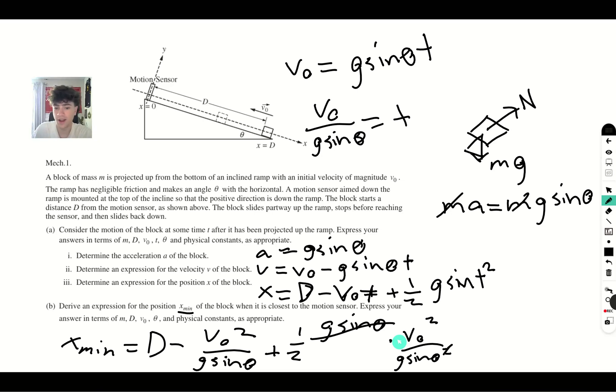Or sorry, rather minus v initial squared over g sine theta. So x minimum is going to be d minus 1 half v initial squared over g sine theta.